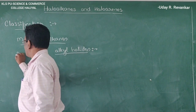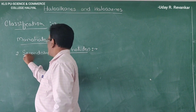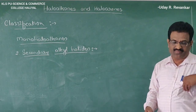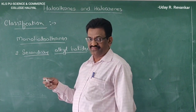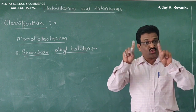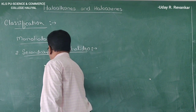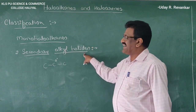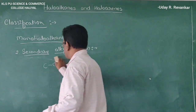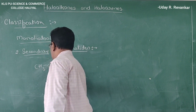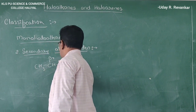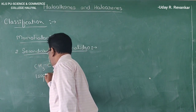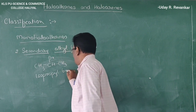The second type is secondary haloalkanes. Secondary haloalkanes are those in which the halogen atom is attached to a secondary carbon atom. A secondary carbon atom is one which is attached to two other carbon atoms. For example, CH₃CHBrCH₃ — isopropyl bromide, also called 2-bromopropane.